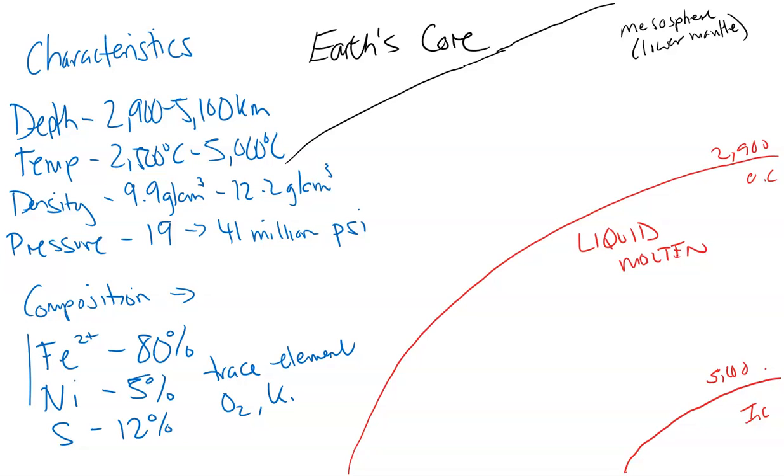Now, iron and nickel are metallic, so really it's an iron alloy, a molten iron alloy. And obviously, dense elements, heavy elements.